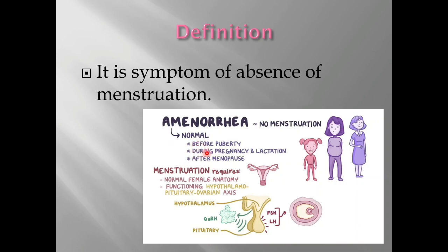during pregnancy and lactation, and after menopause. For normal menstruation to occur, there are certain prerequisites — a woman should have a normal female anatomy and she should have proper functioning of the hypothalamo-pituitary-ovarian axis.